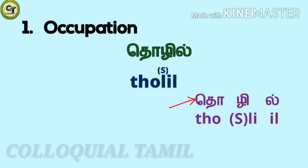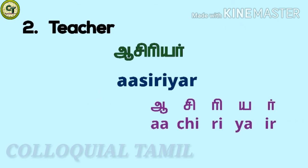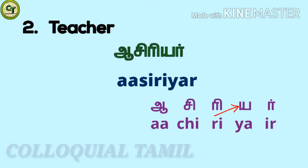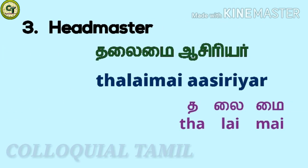Tholil: 'to' - a short zone letter, 'real' - a short zone letter, 'ill' - a consonant together: tholil. For teacher: 'a siri air' - 'a' long zone vowel, 'chi' a short zone letter. 'Chi' may also sound as 'c' in some words. 'Ri' a short zone letter, 'e' a short zone letter, 'air' - a consonant together: a siri air. For headmaster: 'thalai mai a siri air.'